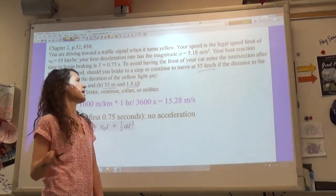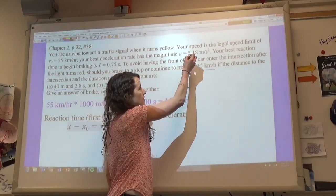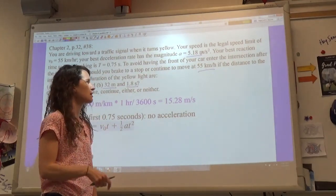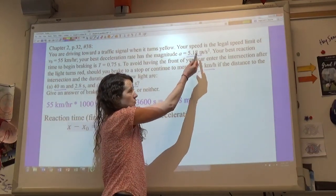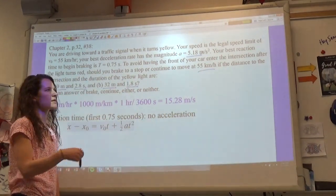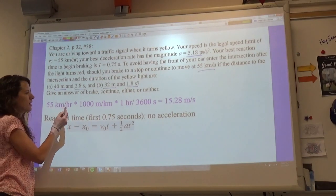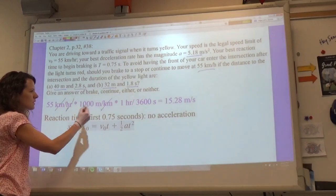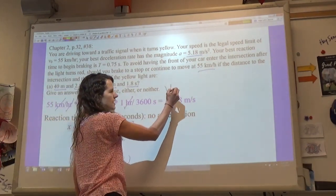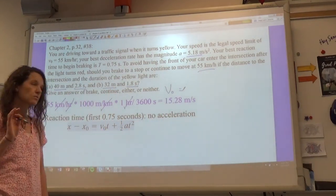So the first thing we need to do is we recognize that we are told this acceleration, it's a magnitude of 5.18 meters per second squared, but it's a negative acceleration because you're decelerating. And so since that's in meters per second squared and your velocity is in kilometers per hour, we first have to change our unit so that everything is in meters and seconds. So I start with my 55 kilometers per hour, my kilometers cancel out here, my hours cancel out here, and we find out that our initial velocity is actually 15.28 meters per second.